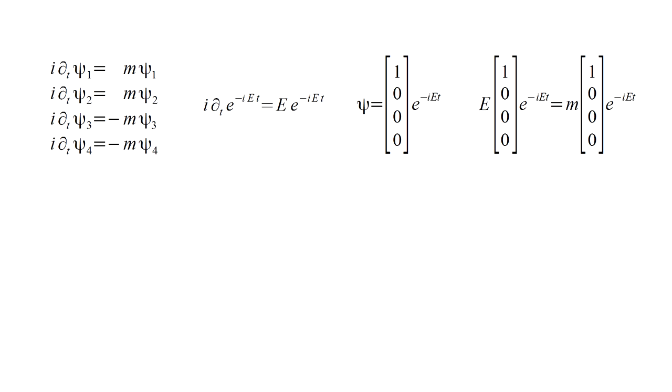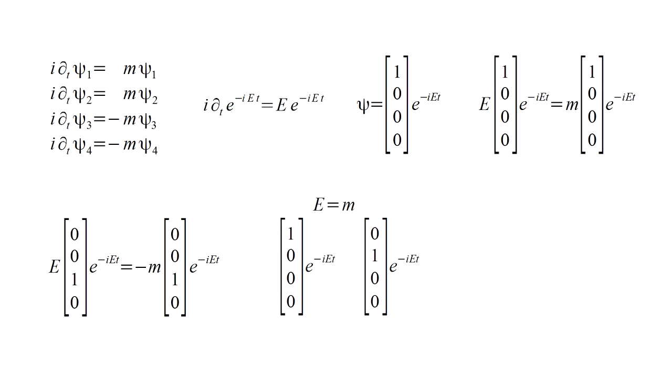We get a similar result if we have only a psi-2 component. For a wave function with only a psi-3 or psi-4 component, however, we end up with e equals minus m. We have two solutions with e equals m corresponding to the first two components, and we have two solutions with e equals minus m corresponding to the last two components.